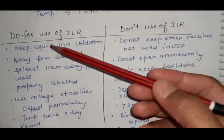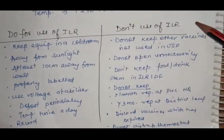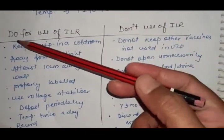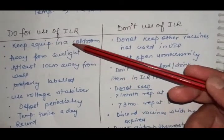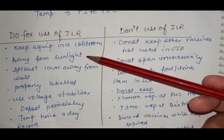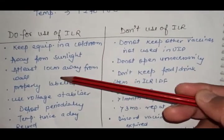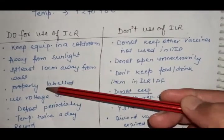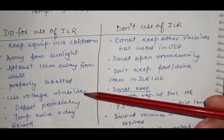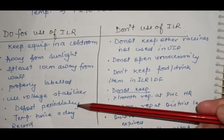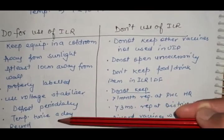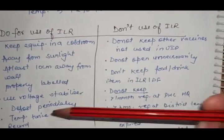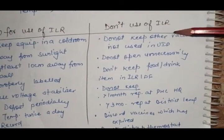DOs for use of ILR: Keep equipment in cold room away from sunlight, at least 10 cm from wall. Properly labeled. Use voltage stabilizer. Defrost periodically. Temperature should be recorded twice a day, and recording of vaccines should be maintained.